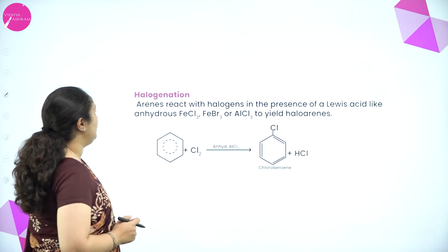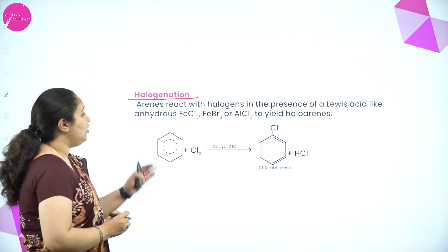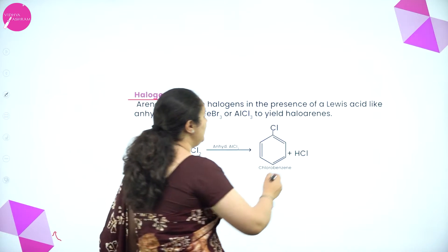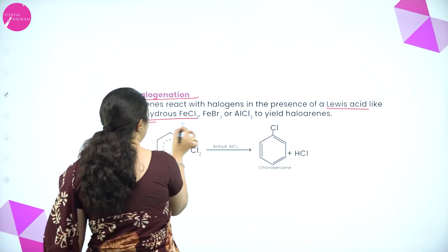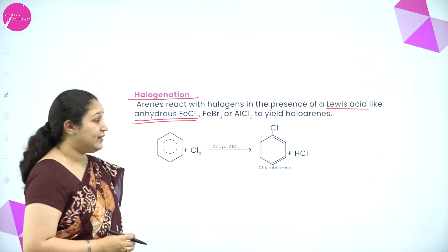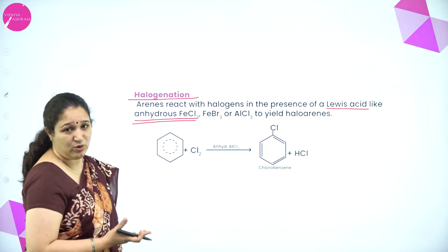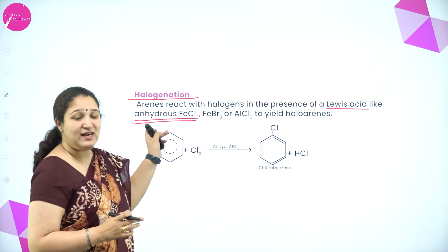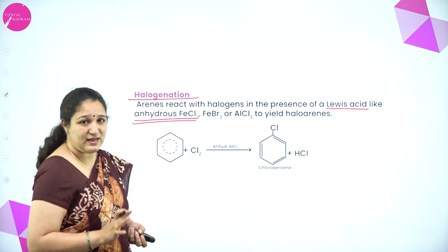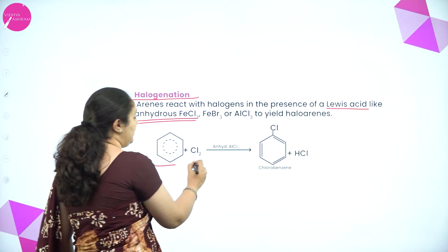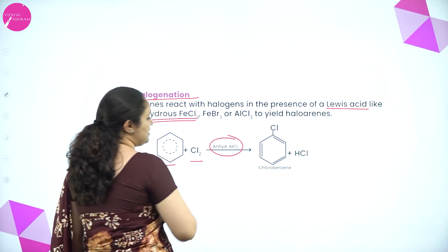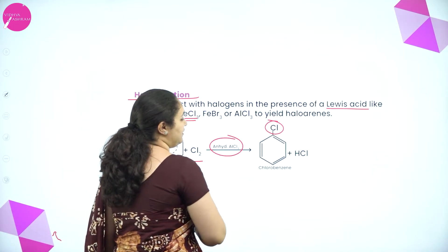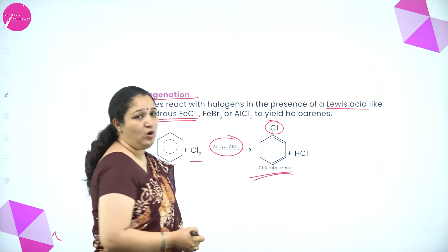Next is the halogenation reaction. Arenes or benzene react with a halogen in the presence of a Lewis acid like anhydrous ferric chloride, ferric bromide, or aluminium chloride, to give haloarene. Taking benzene and treating it with chlorine in the presence of anhydrous aluminium chloride, one hydrogen gets substituted with chlorine to give chlorobenzene.